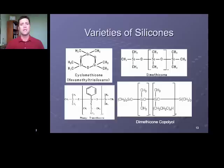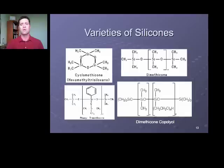Silicones are also used. The key thing to look out for is the suffix '-cone' (C-O-N-E) in a raw material name — if you see that, it's very likely to contain some type of silicone. Examples include cyclomethicone, dimethicone, and phenotrimethicone. These are all examples of silicone-containing materials.